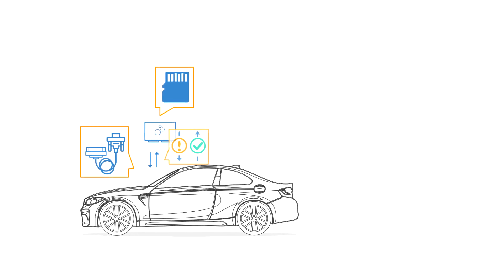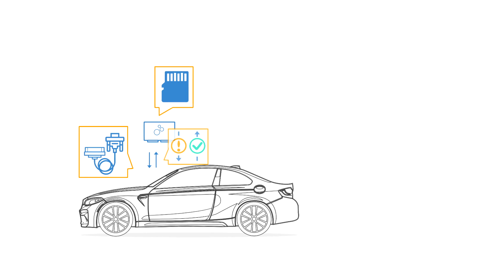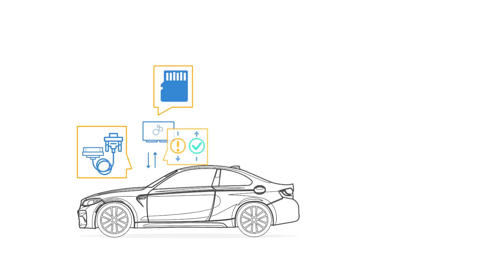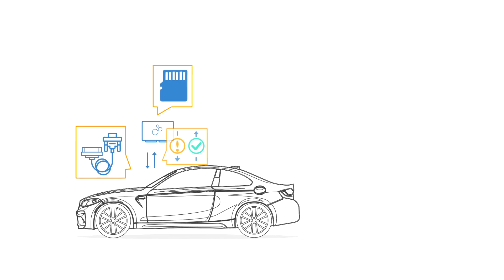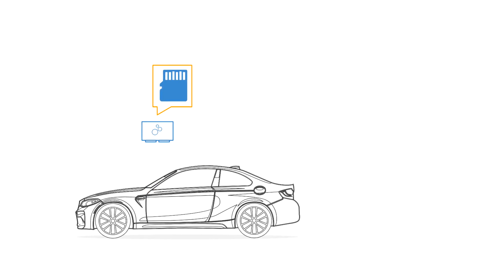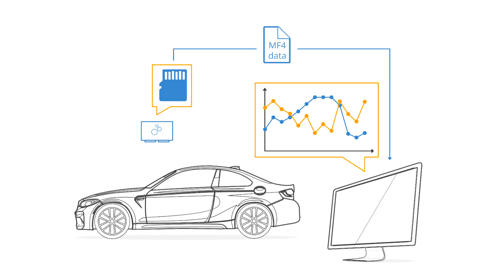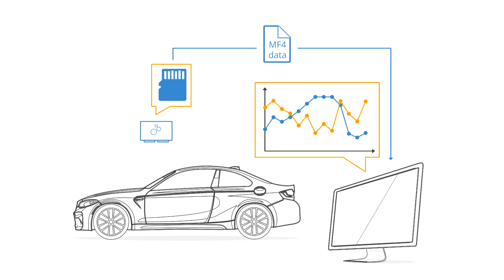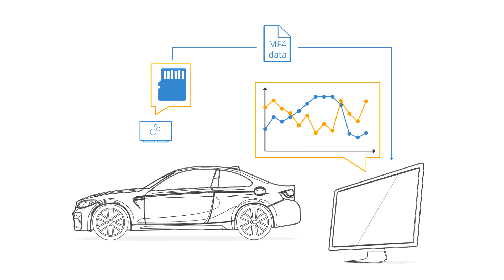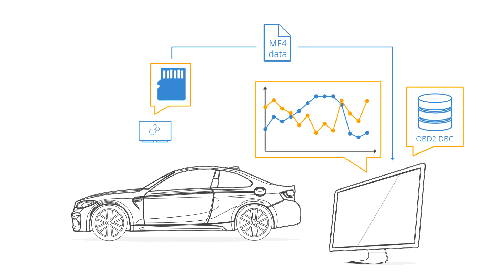If the car supports the requested OBD2 messages, it will respond with OBD2 response frames, typically with CAN ID 7E8. Finally, disconnect your device and extract the log files from your SD card. You can now decode the data via the 100% free software tools and our free OBD2 DBC file.